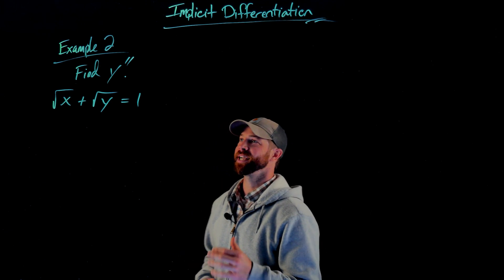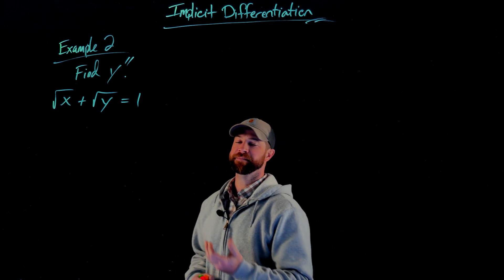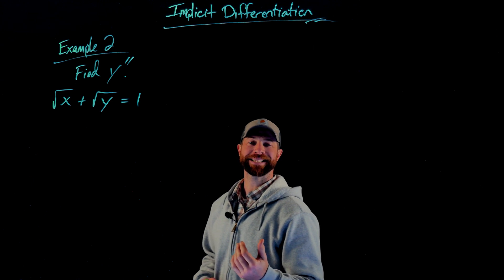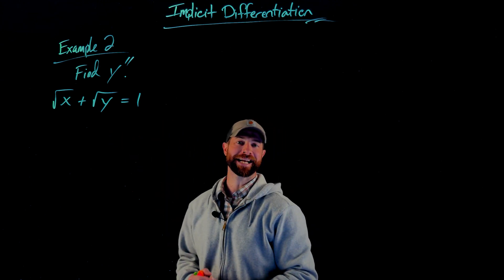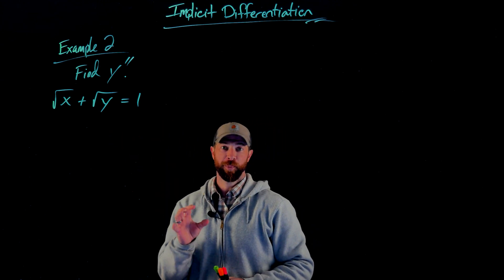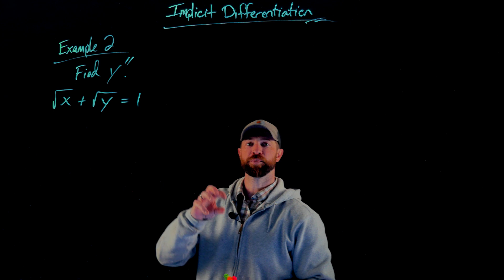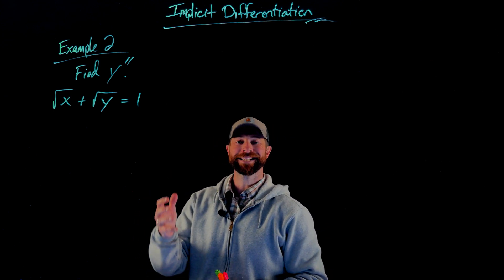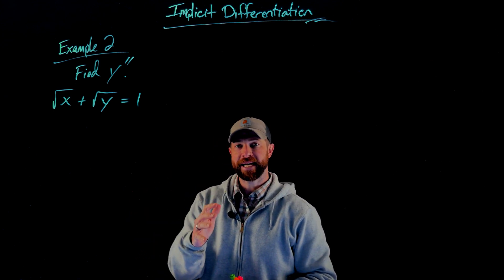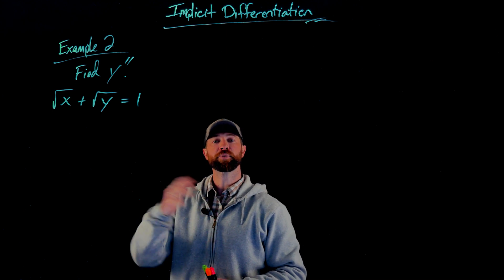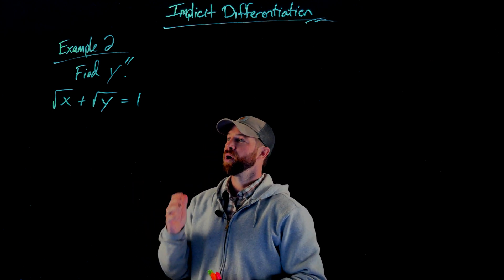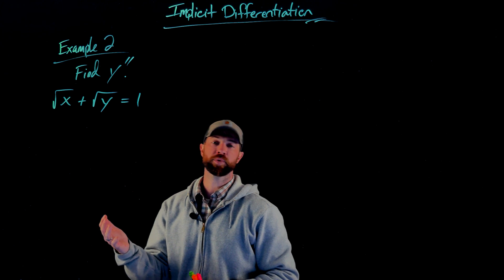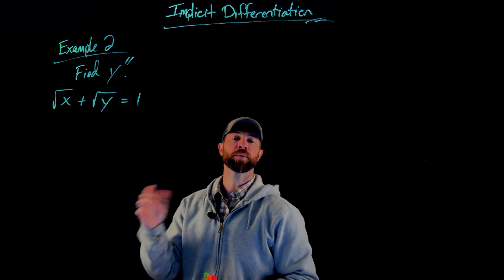In this example, we're being asked to find y double prime, or the second derivative of y with respect to x, given this relationship between x and y. What you're going to notice in this example are really tricky and really useful ways of simplifying expressions as we go, given previous true statements. We're starting with the statement that the square root of x plus the square root of y equals 1.